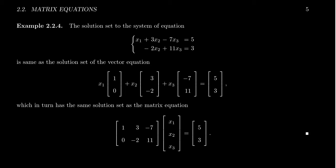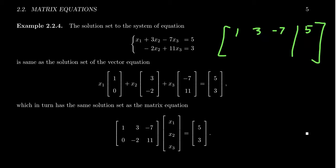This just gives us a different way of writing the same thing. Consider the following linear system with two equations and three unknowns: the first equation is x1 plus 3x2 minus 7x3 equals 5, and the second equation is negative 2x2 plus 11x3 equals 3. We can rewrite this linear system in a lot of different ways. We could write it as an augmented matrix: 1, 3, negative 7, augment 5; and 0, negative 2, 11, augment 3. We then do row operations to this augmented matrix to help solve it.